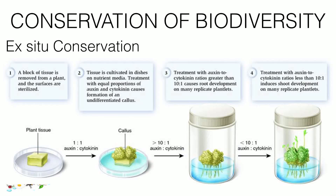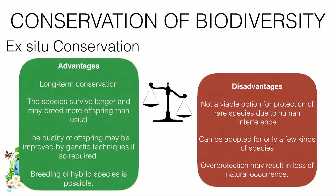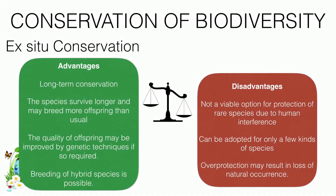The advantages of ex-situ conservation are that it provides long-term conservation, species survive longer and may breed more offspring than usual, and the quality of offspring is improved through genetic techniques — required breeding of hybrid species is also possible. The disadvantages are that it is not viable for rare species due to human interference, can only be adopted for a few species, and overproduction may result in loss of natural occurrence.